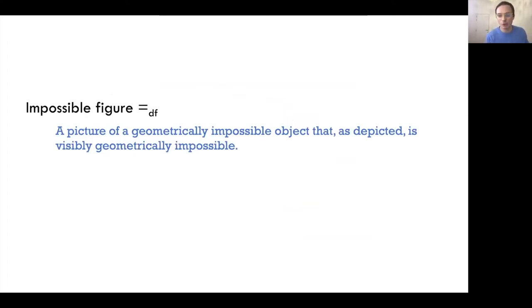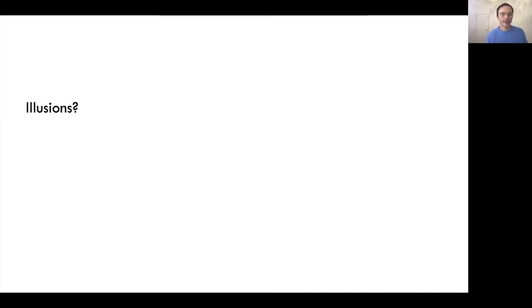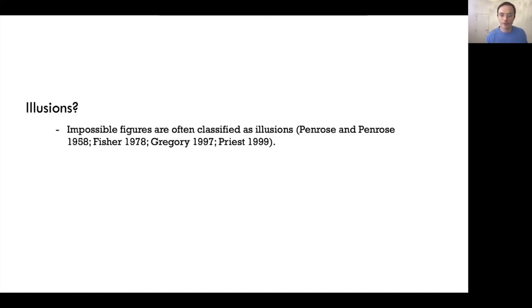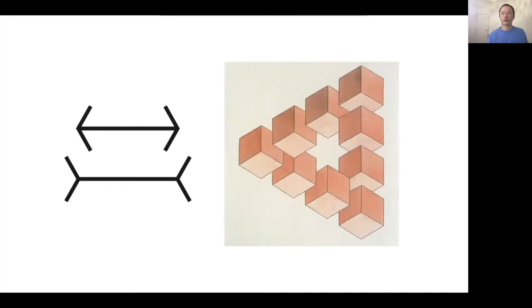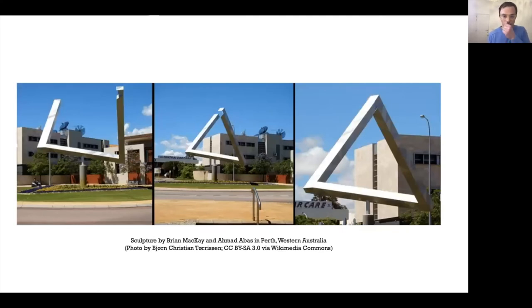What's the reason? The reason is that it doesn't display the object's impossibility. That's the whole point. The point of an impossible figure is to make geometrical inconsistencies available for visual inspection and exploration. So inspired by these reflections, here's my suggested definition: An impossible figure is defined as a picture of a geometrically impossible object that, as depicted, is visibly geometrically impossible. Before we move on, I want to talk a bit about this definition. First, on the assumption that displaying geometrical impossibility is the core aesthetic function of an impossible figure, then since impossibilities can be more or less visible, that means impossible figures can be more or less successful.